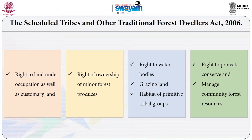The Forest Rights Act of 2006 made elaborate provisions for vesting forest rights on tribal communities. It addressed two kinds of rights: individual rights and collective rights. Individual rights cover forest land used for residential, homestead, and farming purposes. More important from a forest management perspective are collective rights, as the FRA vested collective rights over forests on tribal communities, making them collectively responsible to govern the forest.